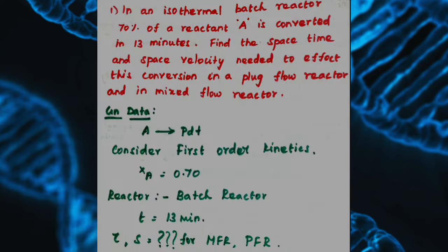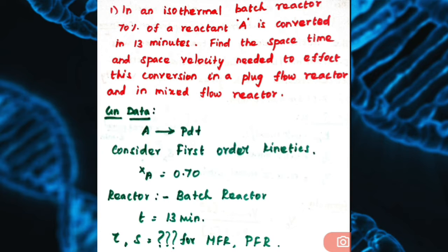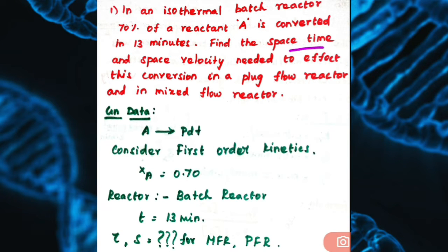Let's see the problem. In an isothermal batch reactor, 70% of reactant A is converted in 13 minutes. Find the space time and space velocity needed to affect this conversion in your plug flow reactor and in your mixed flow reactor.